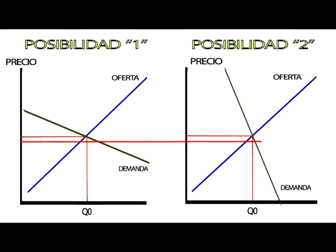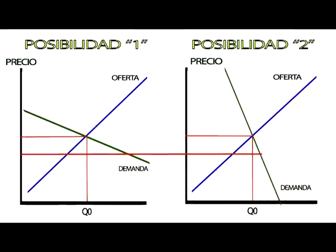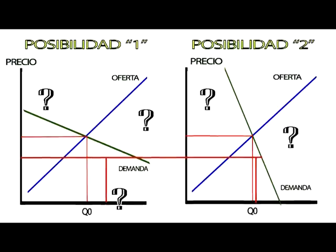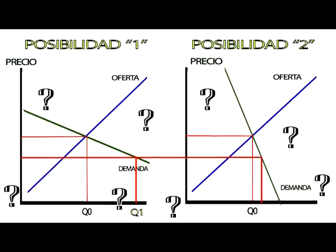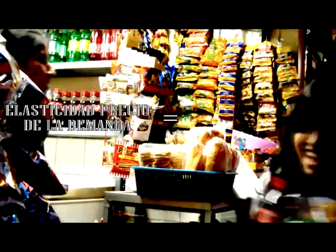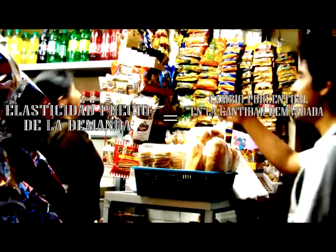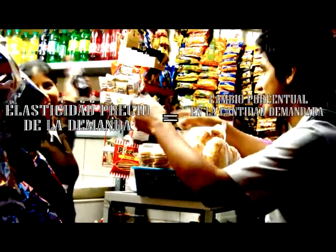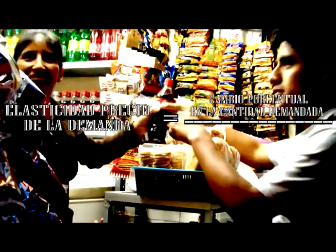Si bien la ley de oferta y la demanda nos permite predecir el efecto producido en el precio del bien, no nos permite conocer en qué proporción porcentual cambia la cantidad demandada ante tal variación del precio. Para ello, hacemos uso de la elasticidad precio de la demanda, la que nos permite evaluar en qué porcentaje cambiará la cantidad demandada si el precio varía en 1%.